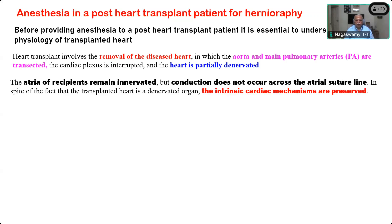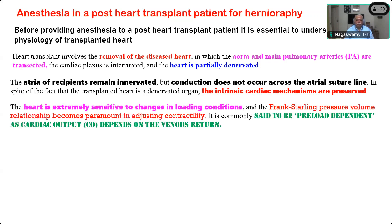The atria of the recipient may remain innervated, but the innervation does not cross the suture line. Up to the suture line it will still be active — that is why you get the native atrium also contracting, giving you a double P wave, particularly if a bi-atrial anastomosis is performed instead of the pulmonary vein anastomosis.